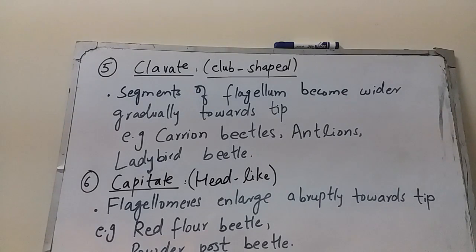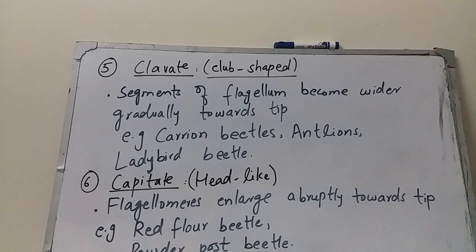The next type is clavate antenna. Clavate means club-shaped. In this antenna, the segments of the flagellum become wider gradually towards the tip — the segments of flagellum gradually enlarge in size towards the tip. Clavate antennae are found in carrion beetles, antlions, and ladybird beetles.